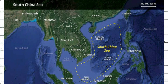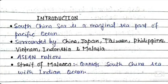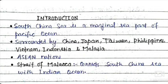Currently, amid US-China tensions, the South China Sea is the hottest part of the world, with a high chance of escalation between the West and China at any point. The South China Sea is a marginal sea and part of the Pacific Ocean. As you can see on the map, there are several countries surrounding this sea.